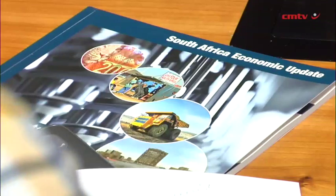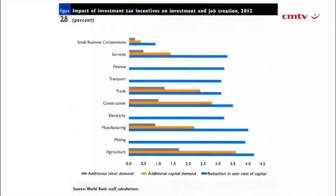The sectors that do respond to these tax incentives and do create jobs are services — what we call other services: health, education and the like — trade, wholesale, retail, hotels, construction, manufacturing, and agriculture. And these are exactly the sectors that also have high multipliers. Creating one job in these sectors will create more jobs through indirect effects — they don't necessarily work in that sector, but they are jobs, and that's what we care about. So you have multiplier effects here.